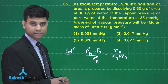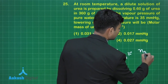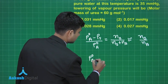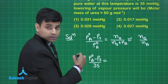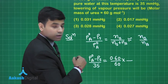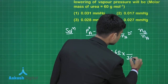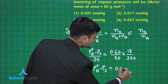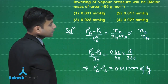Since the concentration of solute is very small, it can be approximated as Nb / Na. So (P°a − Ps) / P°a = Nb / Na. P°a is 35 mm Hg. Moles of solute = 0.6 / 60 (molar mass of urea). Moles of solvent Na = 360 / 18. Solving gives the lowering of vapor pressure as 0.017 mm of Hg, so the correct answer is option 2.